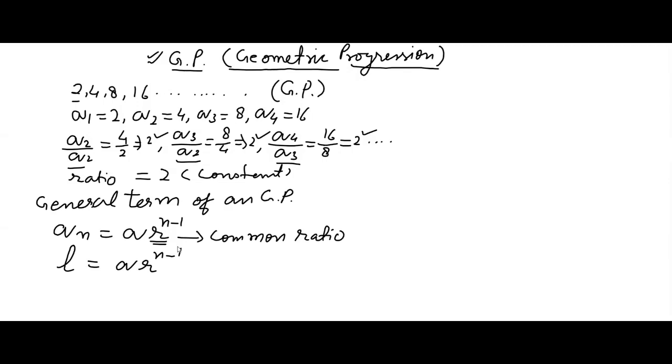Here, A is known as the first term of GP. First term of GP, R is known as the common ratio.